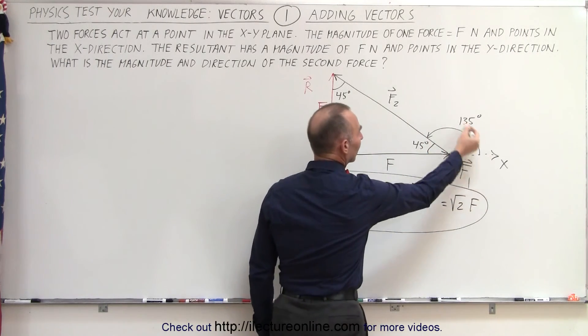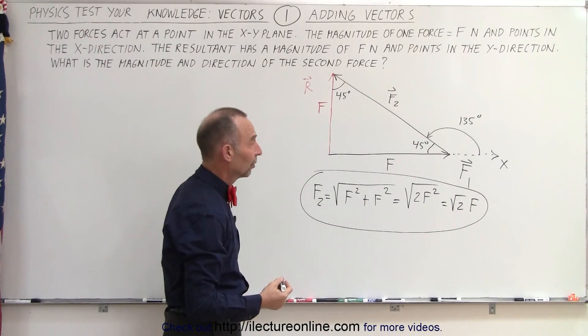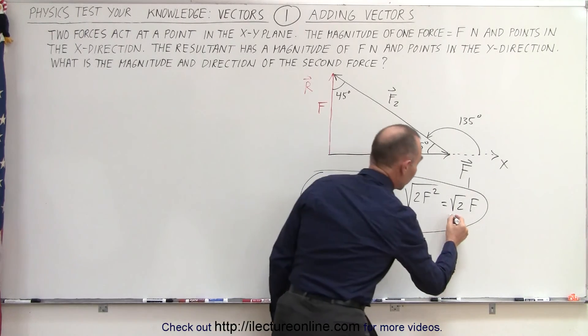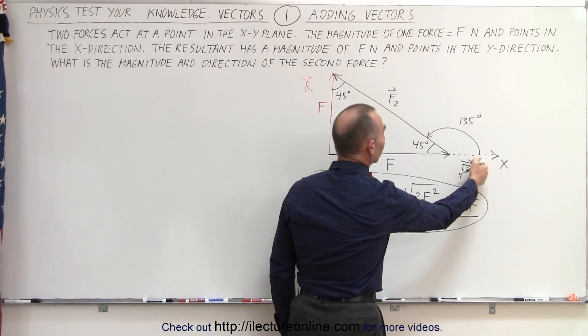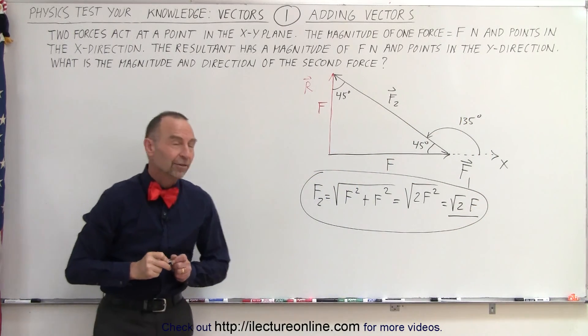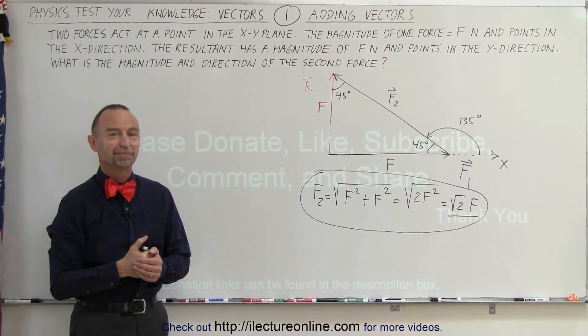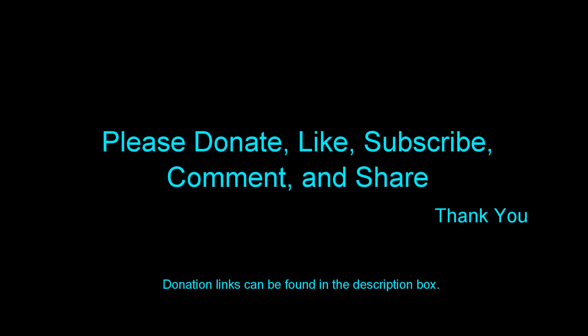And for the direction, it will be an angle of 135 degrees relative to the positive x-axis. So the magnitude is square root of 2 times f, the direction is 135 degrees away from the positive x-axis, and that is the result of this problem. I'm going to end this problem.